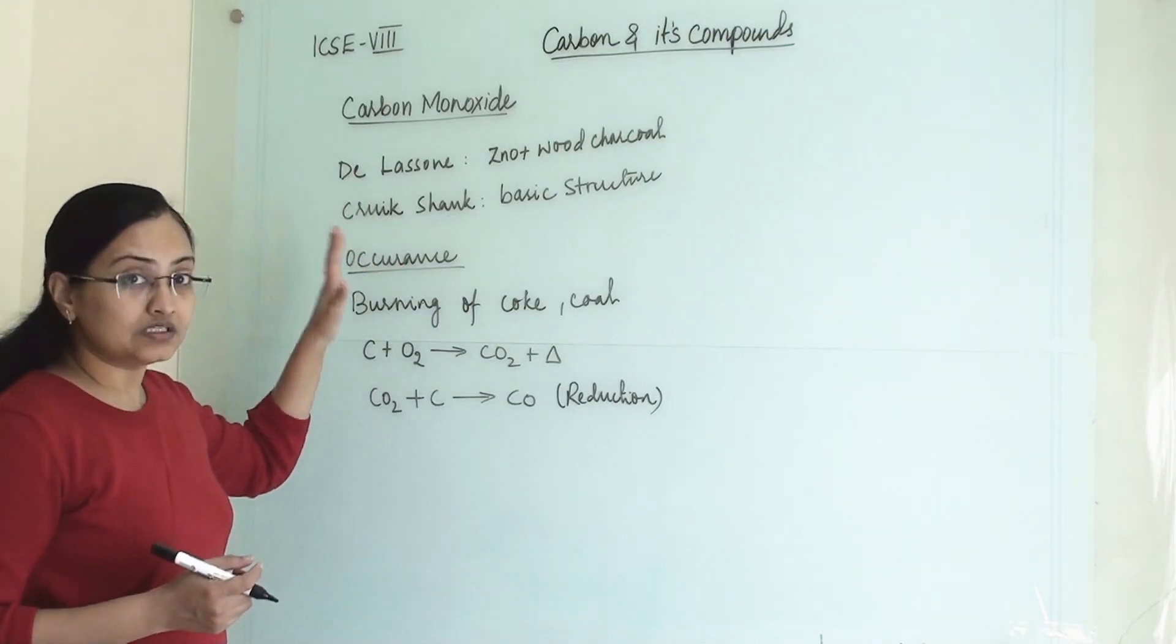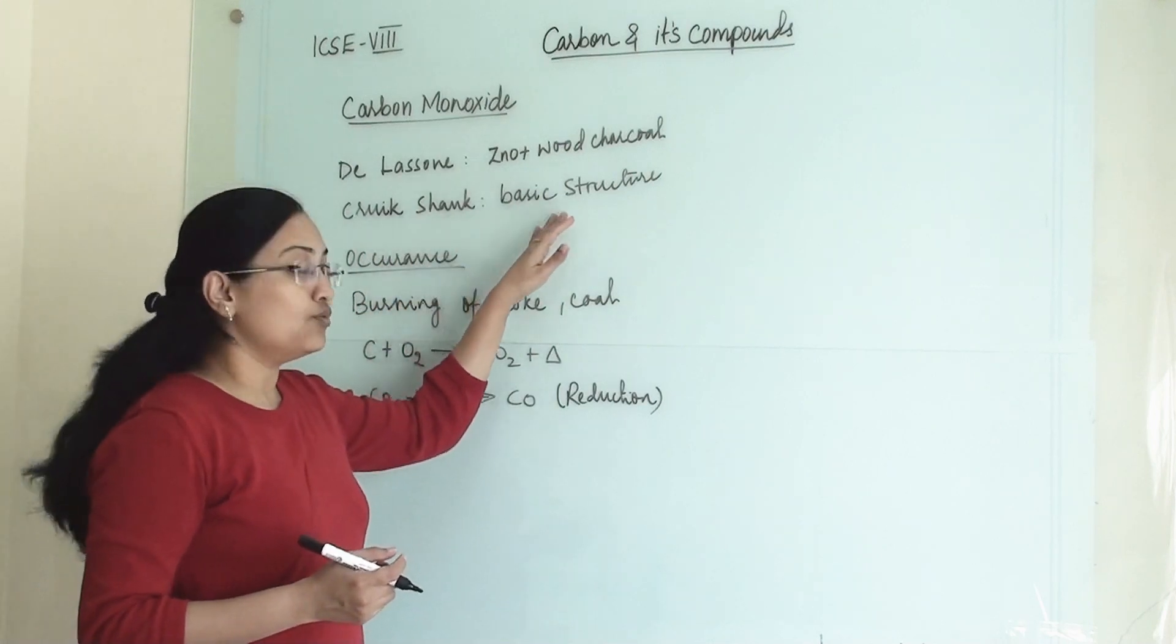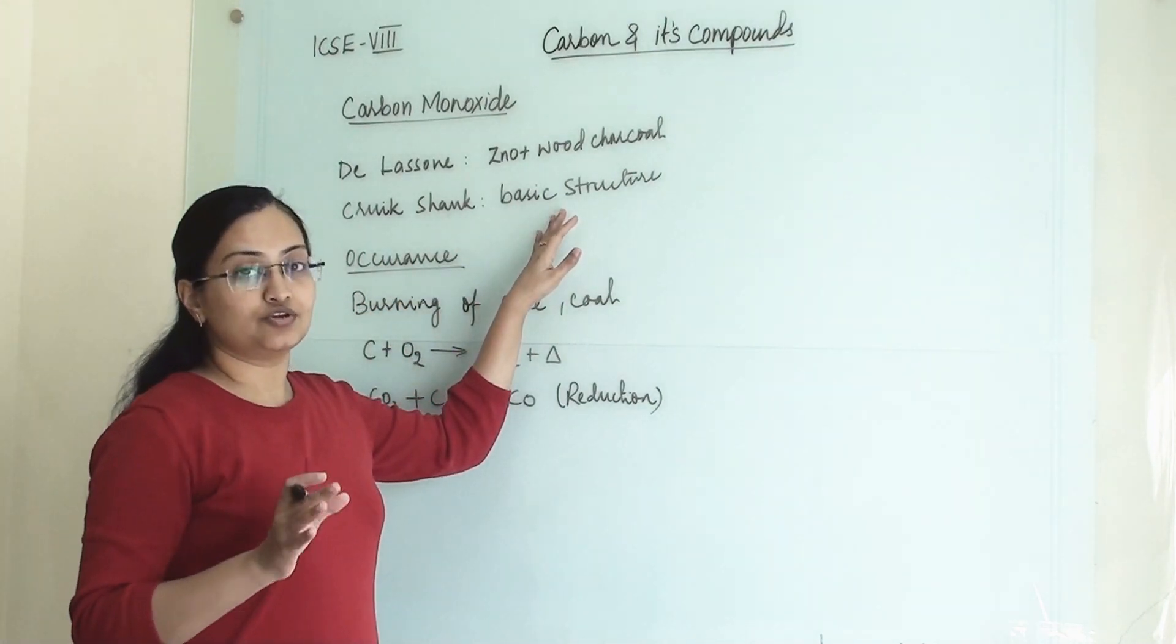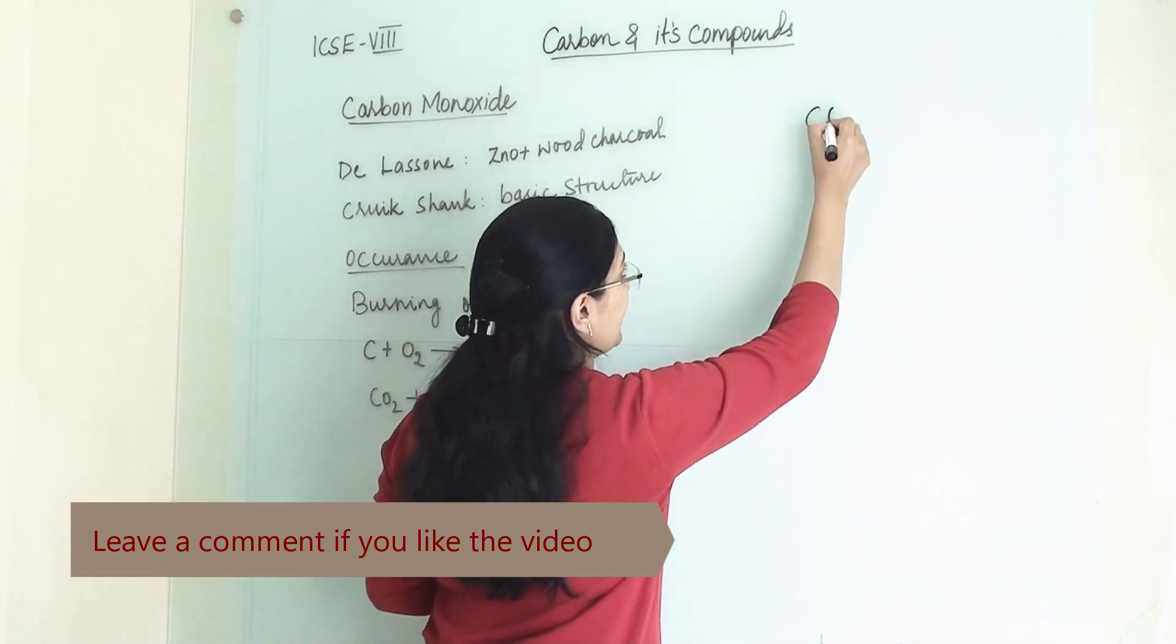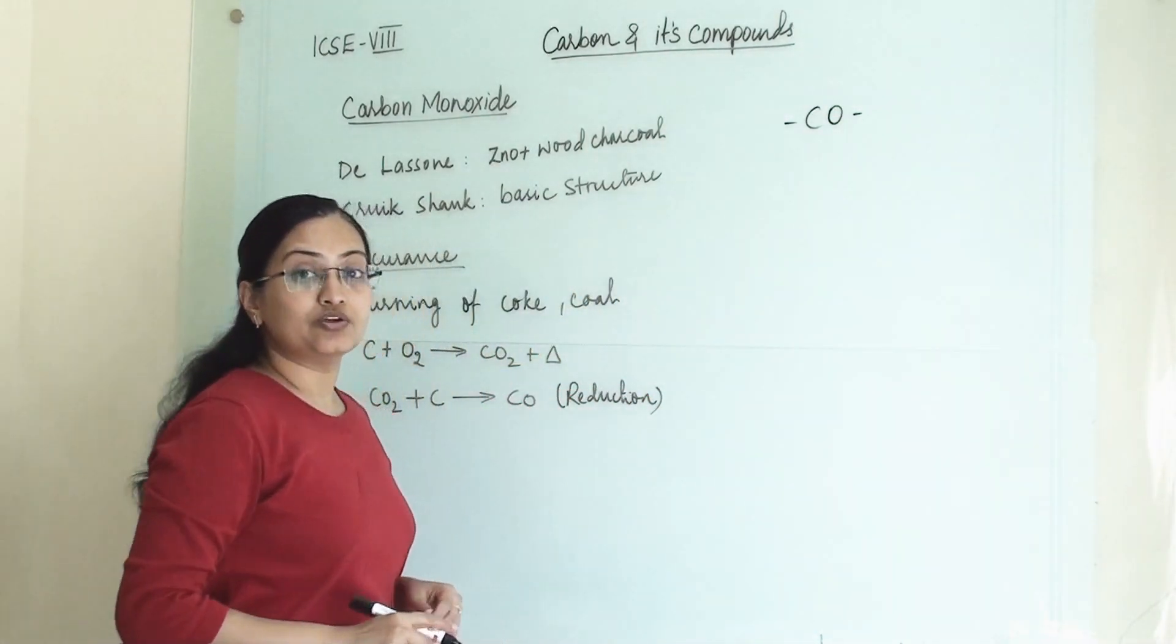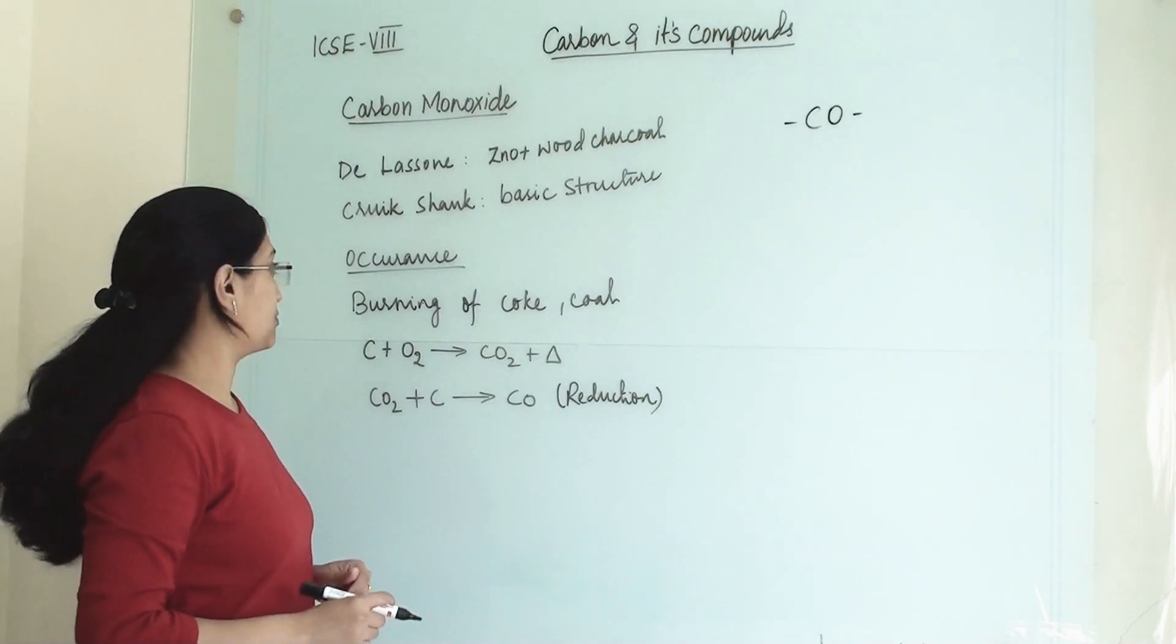Cruikshank was another scientist who found out the basic structure of carbon monoxide. We know that it is carbon and oxygen. This is the molecular formula of carbon monoxide.